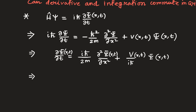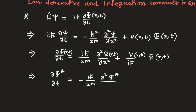Now take the complex conjugate of this equation. On the left side we get del ψ* del t, which equals negative ih-bar over 2m times del² ψ* del x² minus V over ih-bar times ψ*(x,t).